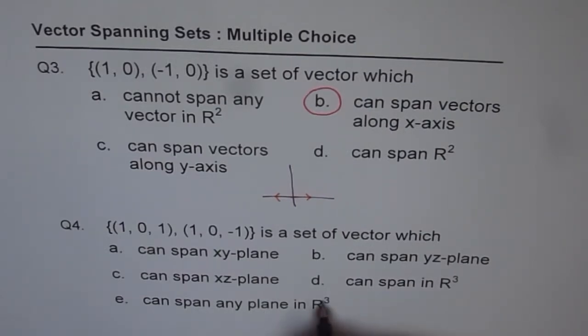Well it could have been in R², any plane in R². So let's just make a change because we already have that option 'can span in R³'. So we have these five options, what do you think?